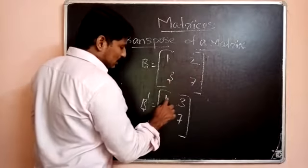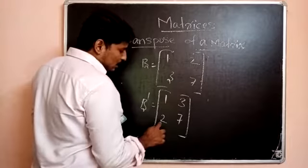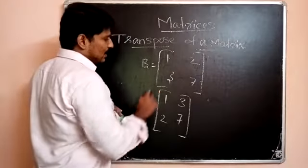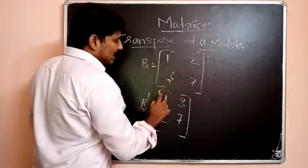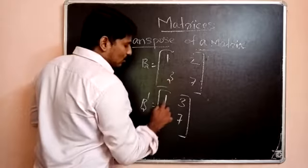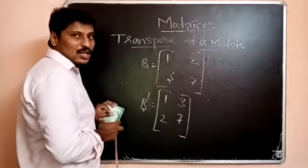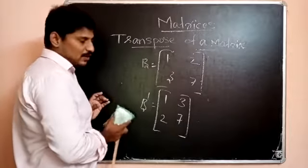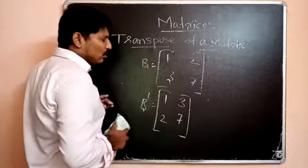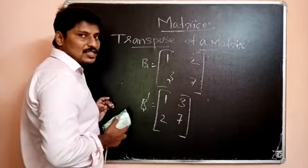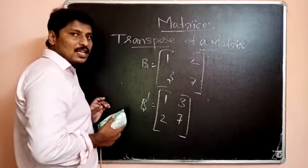The first row — 1, 2 — becomes the first column. Then 1, 3 are the first column's elements which become the first row of the transpose. So rows and columns are interchanged to get the transpose.